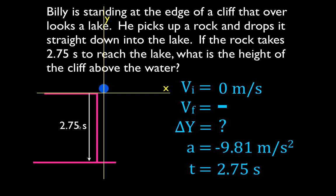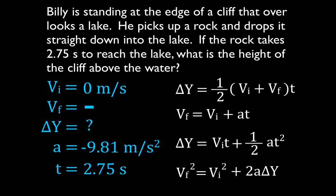We drew a diagram, wrote down all five variables, and filled in the information. Now we pick our kinematic equation. For kinematics, you're given three variables and asked to solve for a fourth — each equation has four variables. We're solving for change in position, so we can eliminate any equation that doesn't contain it. We also eliminate equations that include final velocity, since we don't know that. The equation that works contains change in position, initial velocity, acceleration, and time — and we know all three of those other variables. That's our equation.